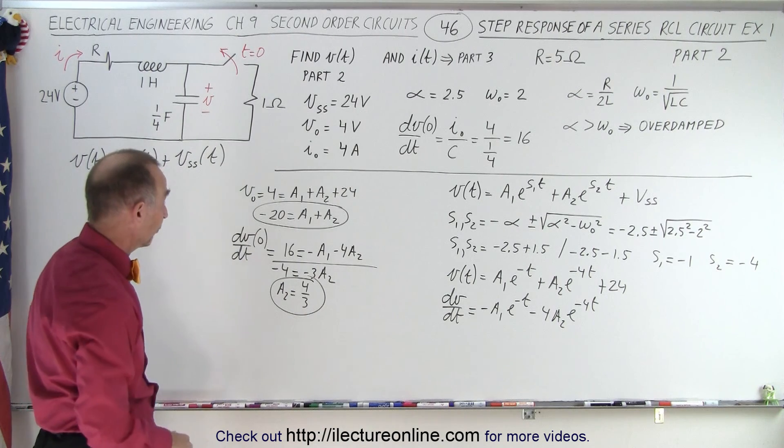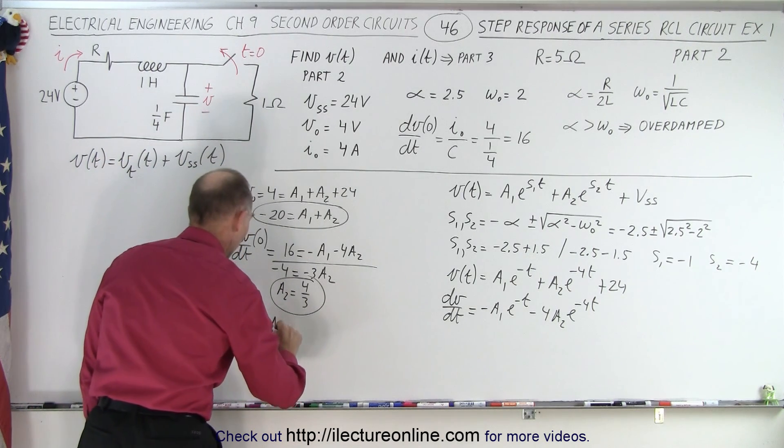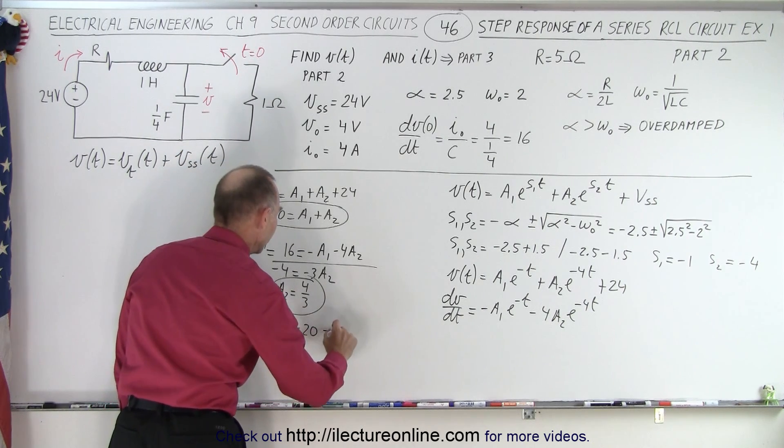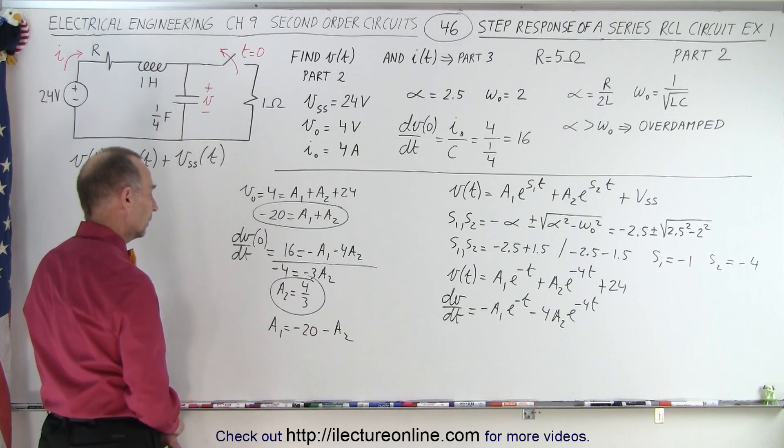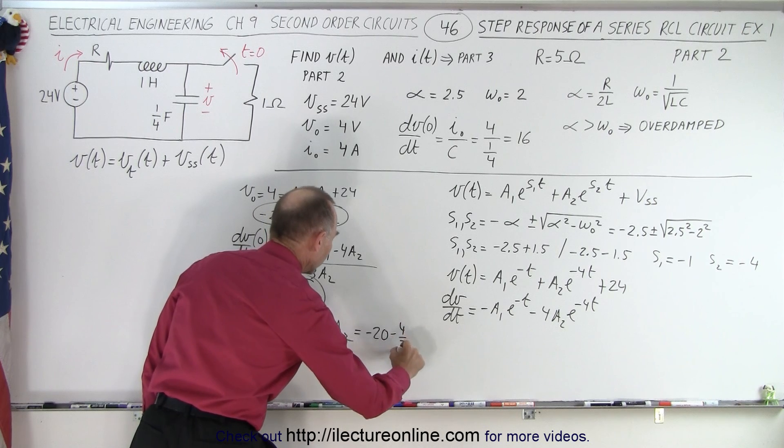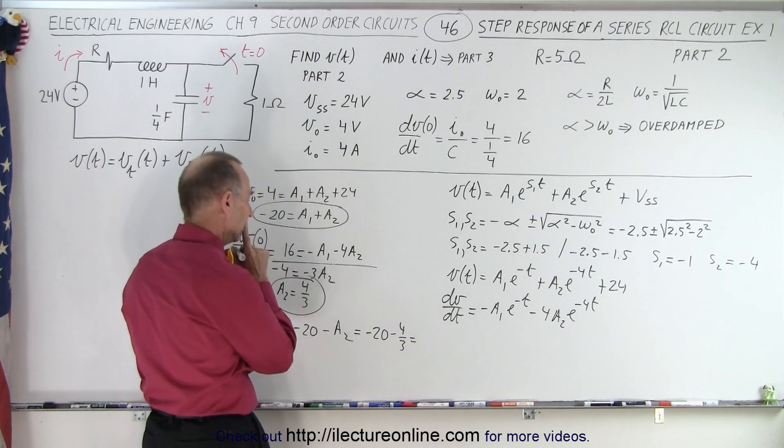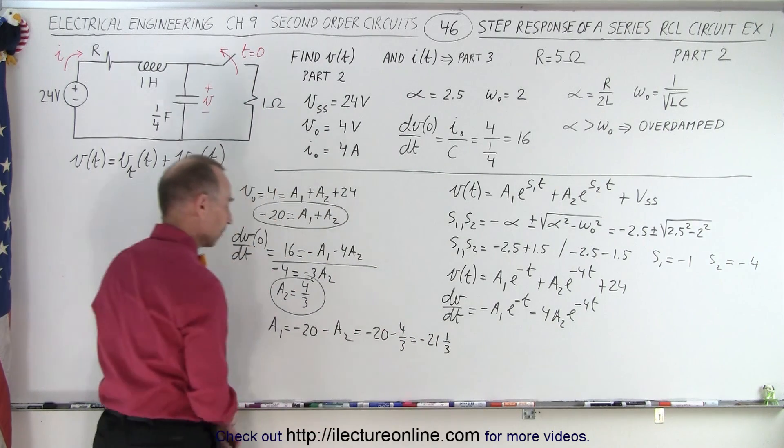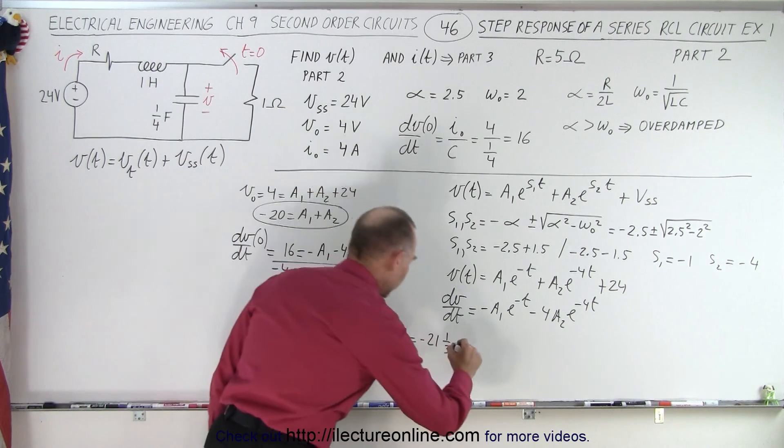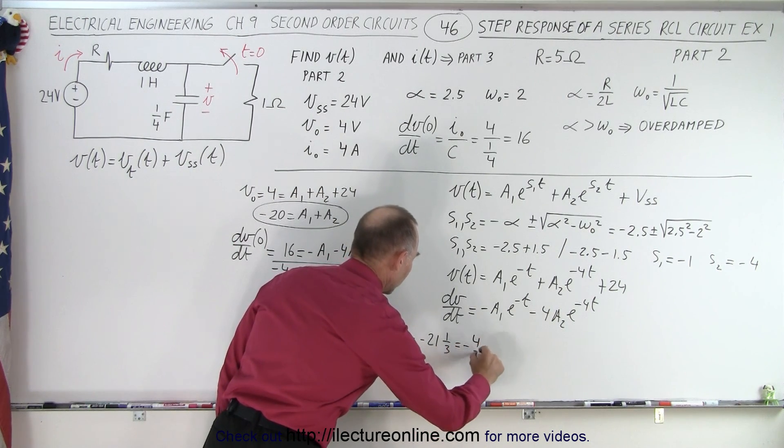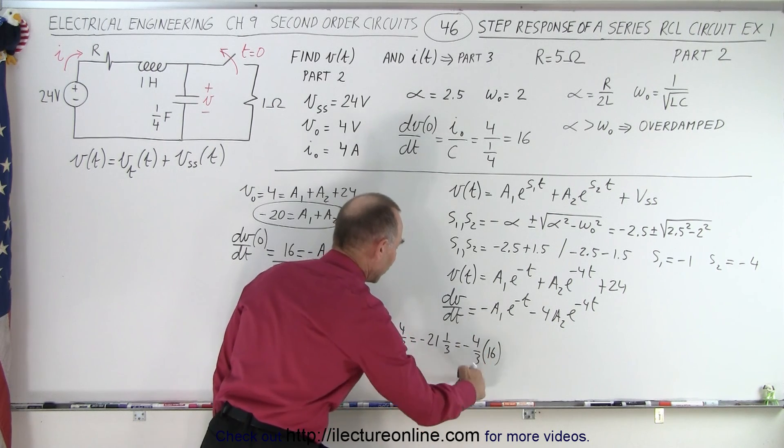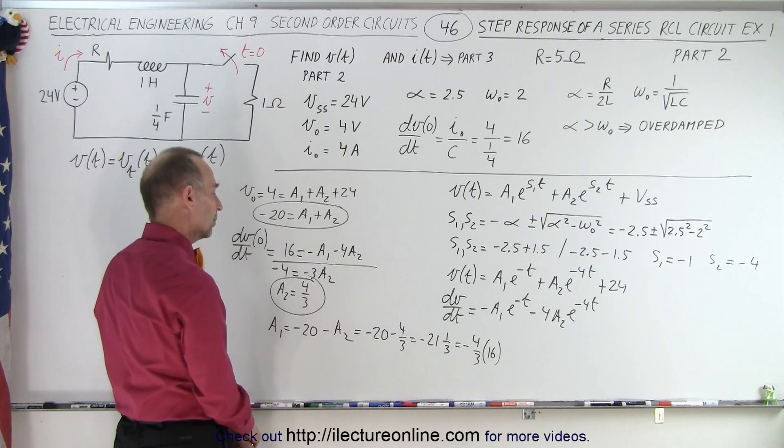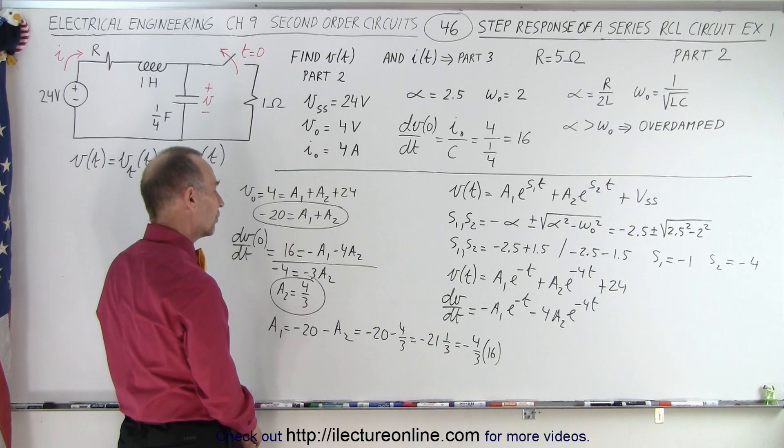Of course, when A2 is equal to 4 thirds, we can solve for A1. So A1 is equal to minus 20 minus A2. So that's going to be equal to minus 20 minus 4 thirds, which is equal to minus 21 and a third, which can also be written as minus 4 thirds times 16.